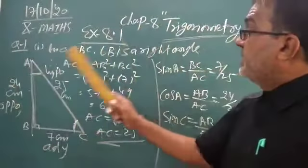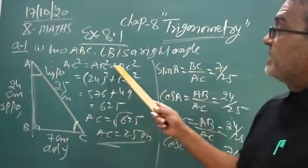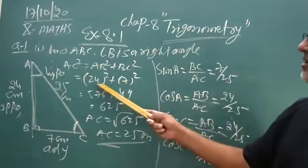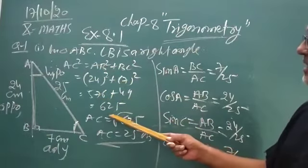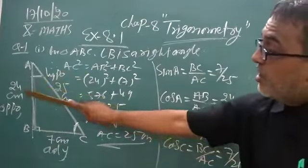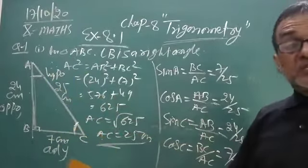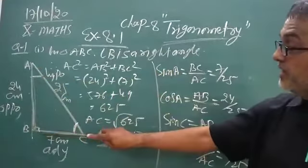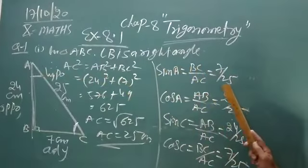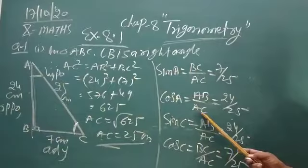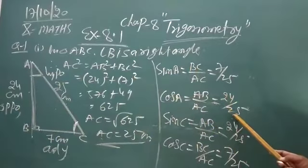In triangle ABC, B is right angle. According to Pythagoras principle, AC square equal to AB square plus BC square. 24, 576 plus 49 is 625. Square root of 625 is 25. When you know all these 3 sides, you will write 6 trigonometric ratios. Sine, sine means opposite. For A, opposite is BC upon AC and 7 upon 25. Cos A adjacent upon hypotenuse. 24 upon 25.